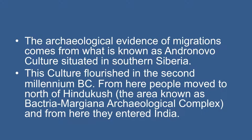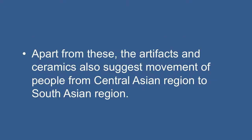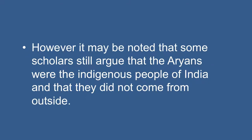The archaeological evidence of migration comes from what is known as the Andronovo culture situated in South Siberia. This culture flourished in the 2nd millennium BC. From here, people moved to the north of Hindu Kush and from here they entered India. During the period between 1900 BC and 1500 BC, we get in these regions evidence of horses, smoke fields, fire cult and cremations, which formed important parts of Aryan life in India. The artifacts and ceramics also suggest movement of people from the Central Asia region to the South Asian region. However, some scholars still argue that the Aryans were the indigenous people of India and did not come from outside.